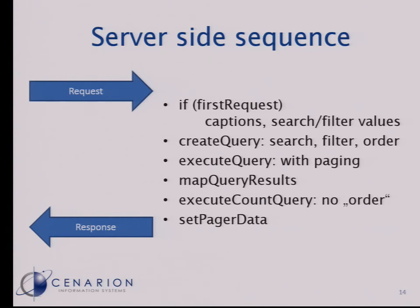We then execute nearly the same query again, but without the order and without the paging — just a count query — so we know how many results there are in total. This lets us tell the user in the paging component: there are 10,000 results for your query. We set that data on the result object and send the result back to the client.